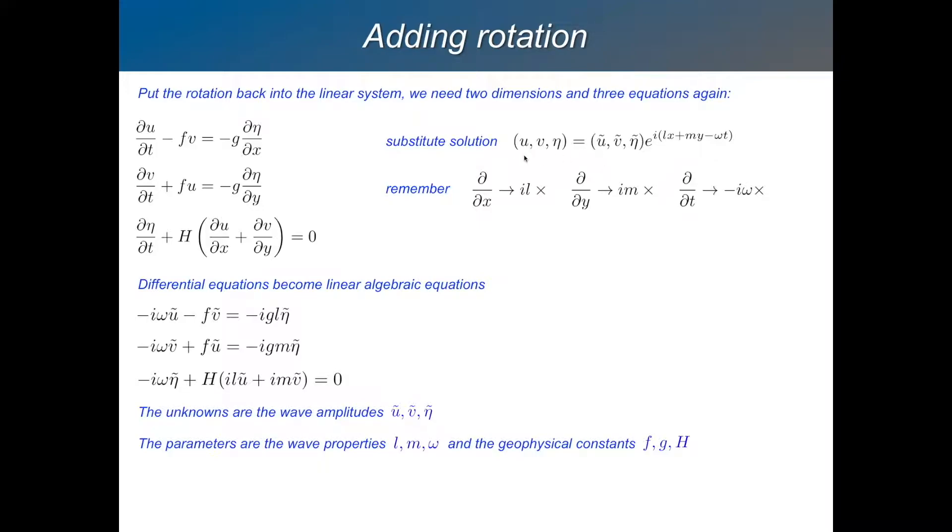So we'll say there's a solution for each of the three variables which is similar. U, V, and eta is some coefficient of amplitude. U tilde, V tilde, eta tilde times this thing which propagates with a wave number L in the X direction and M in the Y direction.